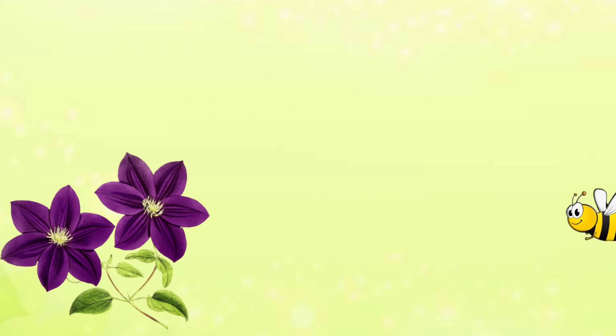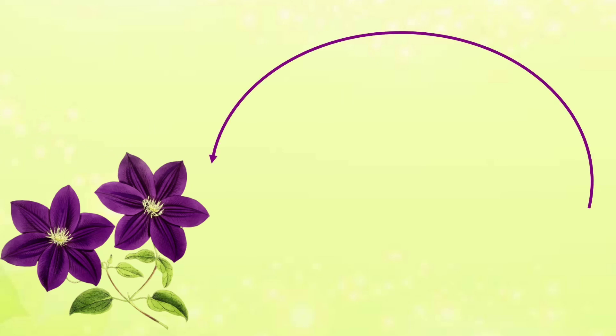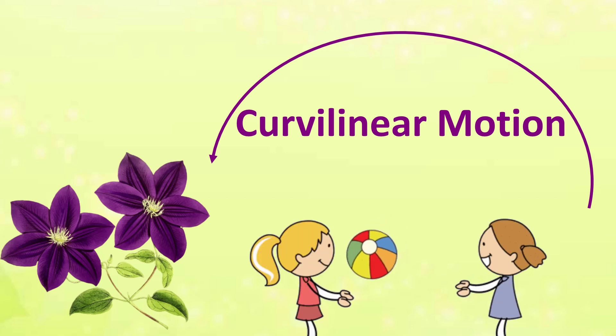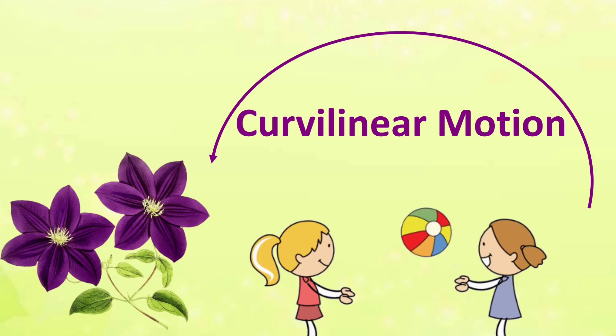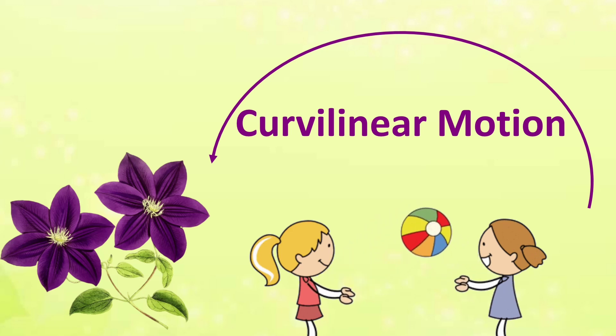Now watch how the bee is moving. The bee is moving ahead but changing its direction. This is known as curvilinear motion. Think where would you have seen this curvilinear motion? Yes, while playing with a ball — when a cricketer throws a ball, the path taken by the ball is curvilinear motion.